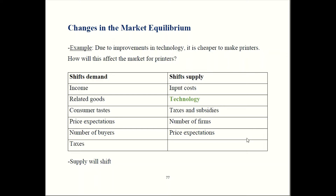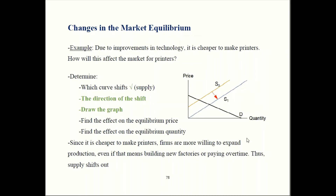Because of this reduction in costs, it could be worthwhile for the firm to build new factories and pay workers overtime. They can still make a profit because they're saving money due to the technology. So supply is going to expand — supply is going to shift out. Now we can draw our picture.